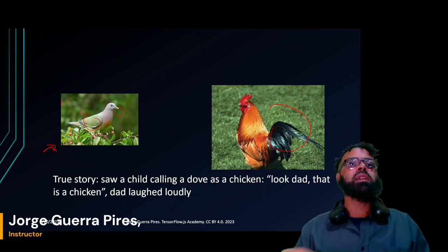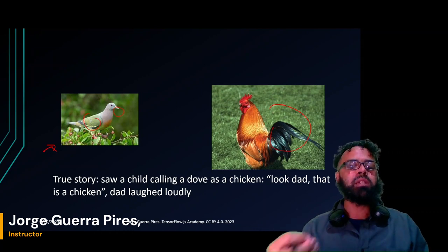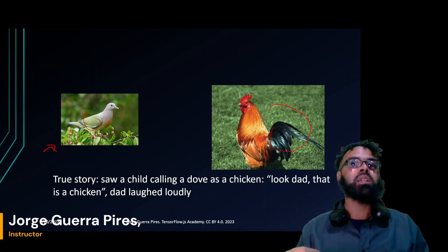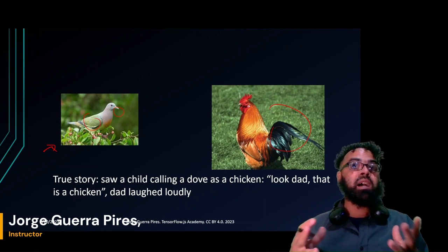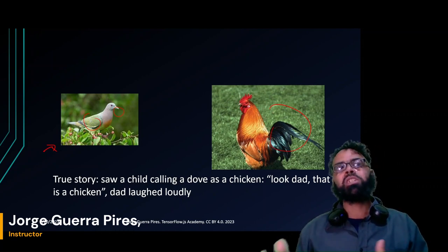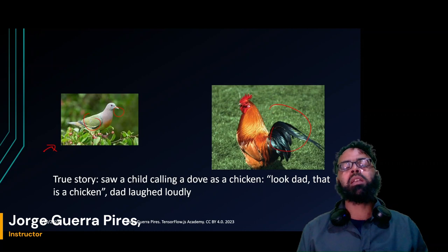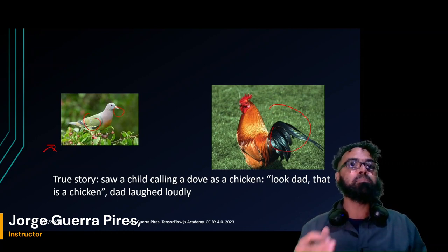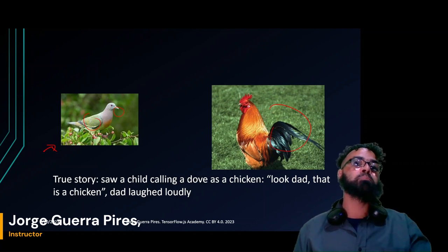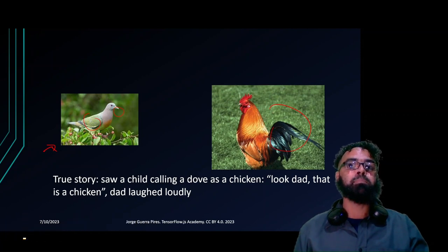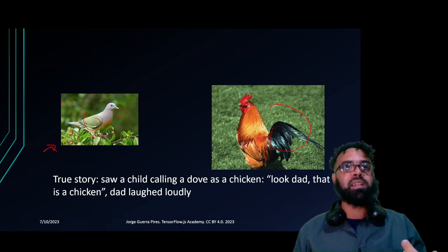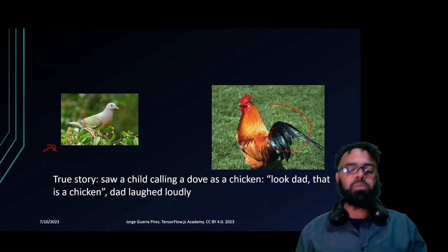In the beginning, a child is like a machine learning model that hasn't been well-trained yet — they're still being trained. Humans take years to be trained; machine learning can be trained in seconds. That's one of the biggest differences. I wasn't amused but curious when the child made the mistake, because machine learning models also make very stupid mistakes. One time I was training a model and it misidentified a backpack as a bulletproof vest — they look similar in the image.